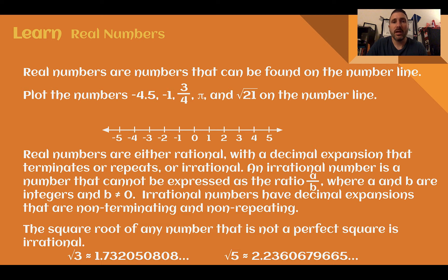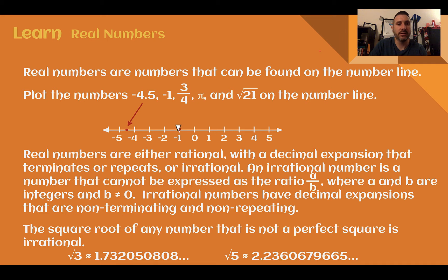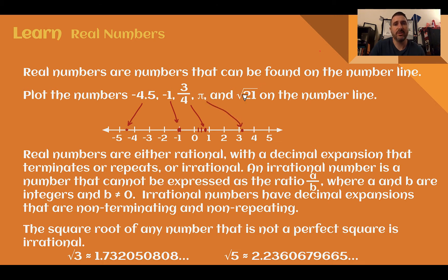Let's plot them on the number line. If you want to pause the video and test your plotting skills before I do it, do that now. Negative 4.5 would be halfway between negative 4 and negative 5, so about there. Negative 1 is given on our number line. 3 fourths would be about right there. Pi is 3.14, so it just barely passes 3. The square root of 16 is 4, and the square root of 25 is 5. 21 is about halfway between 16 and 25, so the square root of 21 would be about right there.